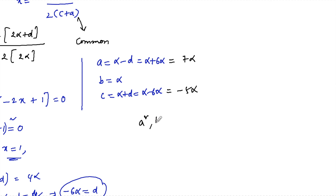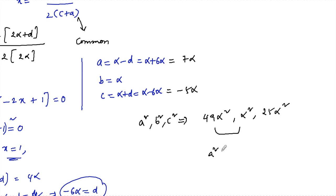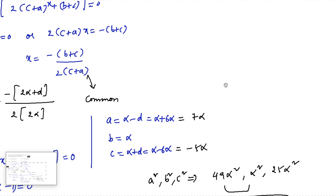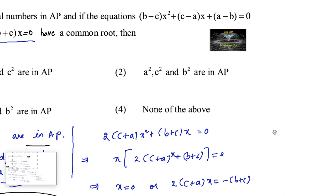Now, a² = 49α², b² = α², and c² = 25α². We can see that a² + b² = 49α² + α² = 50α² = 2 times 25α² = 2c². Therefore a², c², b² are in arithmetic progression. So we conclude that a², c², b² are in AP — that is the answer.